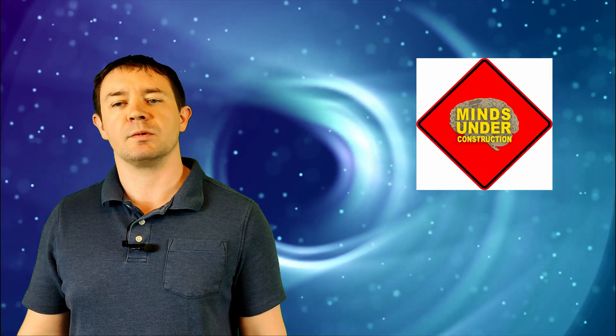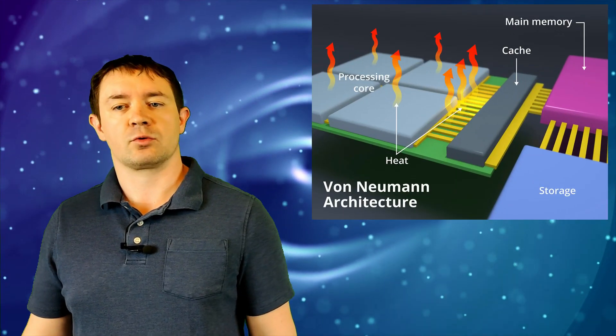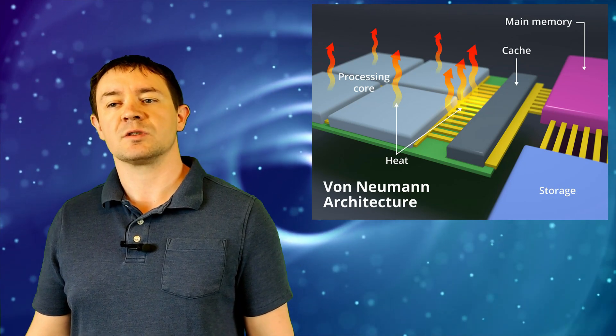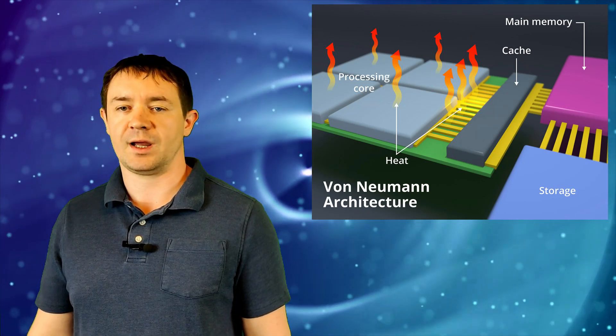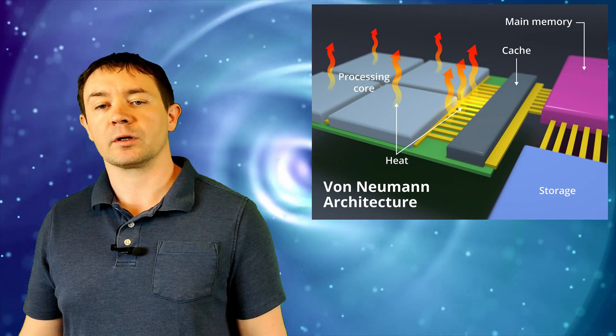It's an attempt to more accurately mimic the functionality of the human brain, while simultaneously reducing power consumption. To see how, let's back up and review how modern computers work. They use something called the von Neumann architecture, which is a set of discrete systems that are designed for totally separate functionality. Short-term memory and long-term memory reside on different hardware and are both distinct from the central processing unit that handles logic.